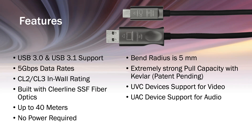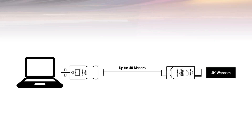We have a bend radius of five millimeters. If you understand how small that is, it really allows you to almost tie this cable in a knot and still have it work — I definitely do not suggest that, but it gives you leeway when installing through conduit. We have an extremely strong pull capacity with a Kevlar strand that runs through and ties off both ends in the head, so when you're pulling on it, you're pulling on the Kevlar, not the cables. This cable is built to last.